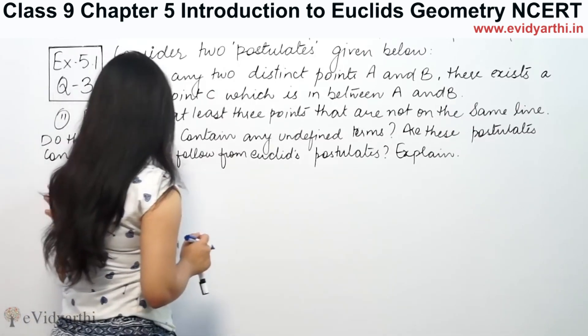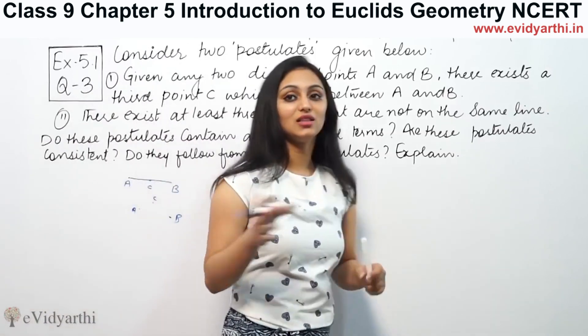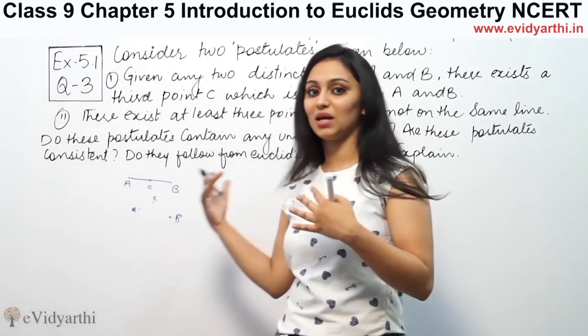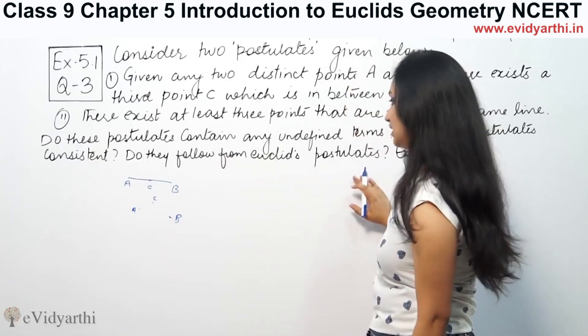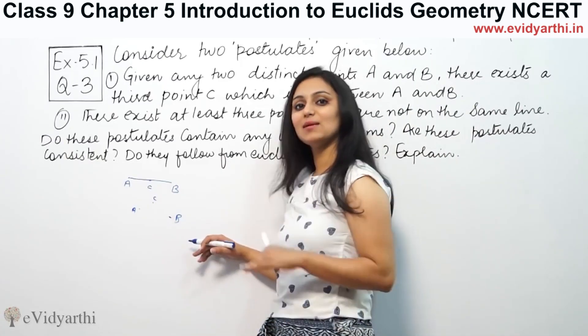Are these postulates consistent? It is not consistent because there are two different solutions about it. Do they follow from Euclid's postulates? Euclid's postulates is not the same as Euclid's axiom.